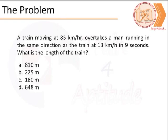Let us now look at the problem. A train moving at 85 km per hour overtakes a man running in the same direction as the train at 13 km per hour in 9 seconds. What is the length of the train?